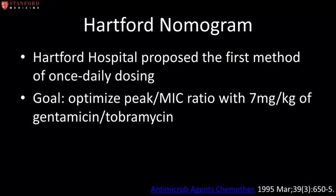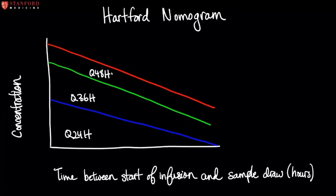The Hartford nomogram was one of the first methods of high-dose extended interval dosing, proposed and implemented by Hartford Hospital in Connecticut. This method aims to optimize the peak-to-MIC ratio by administering a dose of 7 mg/kg of either gentamicin or tobramycin; based on renal function, the dose requires modification to minimize drug accumulation. Due to the high peak concentrations obtained and the drug-free period at the end of each dosing interval, this nomogram eliminated the need for standard peak and trough samples. Rather, a random single blood sample is obtained between 6 to 14 hours after administration, and the serum concentration is then plotted on the nomogram to determine the appropriate dosing interval.